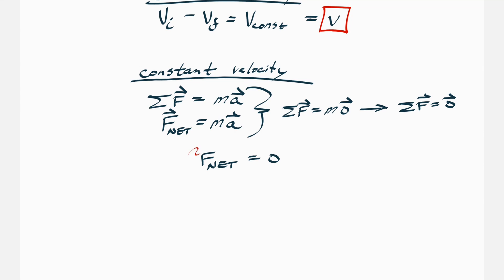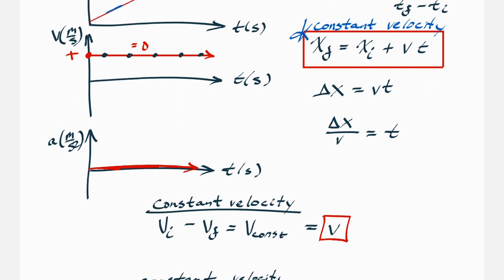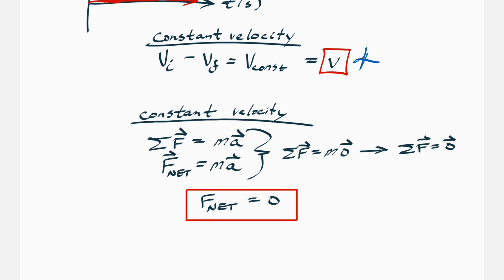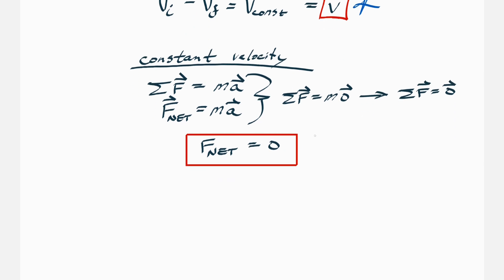To recap: x final equals x initial plus v times t, where v is just constant velocity — not v initial or v final. For constant velocity motion, Newton's second law tells us the sum of forces equals mass times acceleration, but since acceleration is zero, the net force is zero.